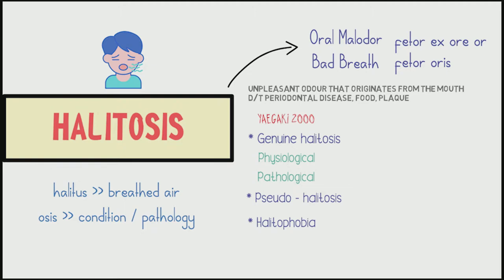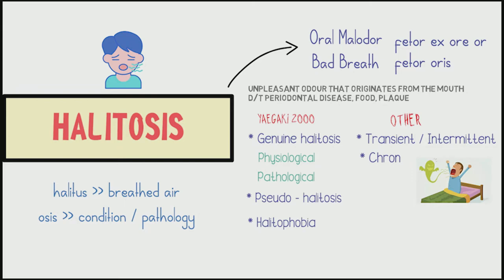Other terms used to describe bad breath include the intermittent or transient type, such as morning breath or breath after eating garlic, tea, or coffee, and the chronic type, which is long-term persistent bad breath. Now coming to the causes of bad breath, these can be bifurcated into intraoral or extraoral causes.